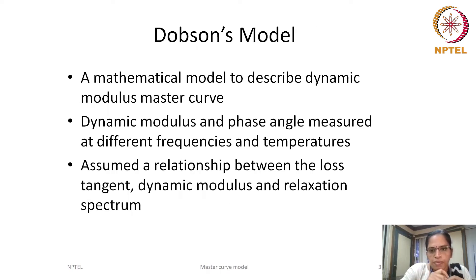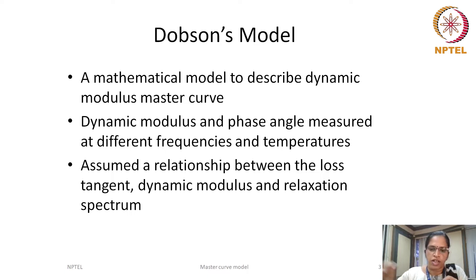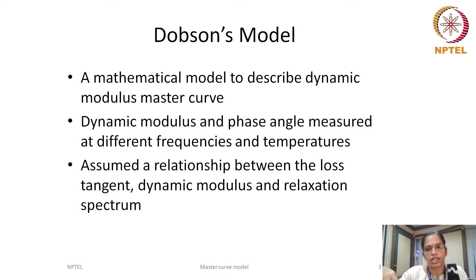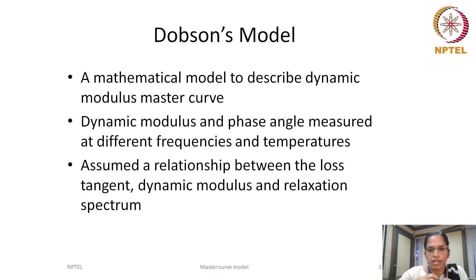In the Dobson model, he gave a mathematical expression to describe the dynamic modulus as a function of reduced frequency. He used laboratory-determined dynamic modulus and phase angle measured over a range of frequencies at different temperatures. He first shifted the dynamic modulus measured at different temperatures to a reference temperature using a predetermined shift factor, and gave a mathematical model to this master curve.